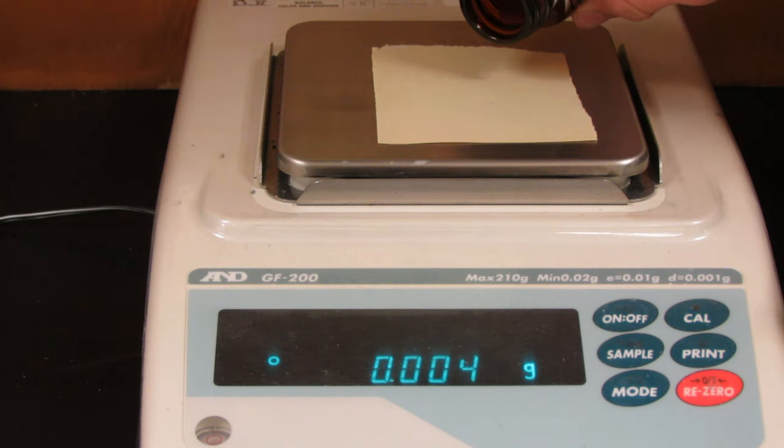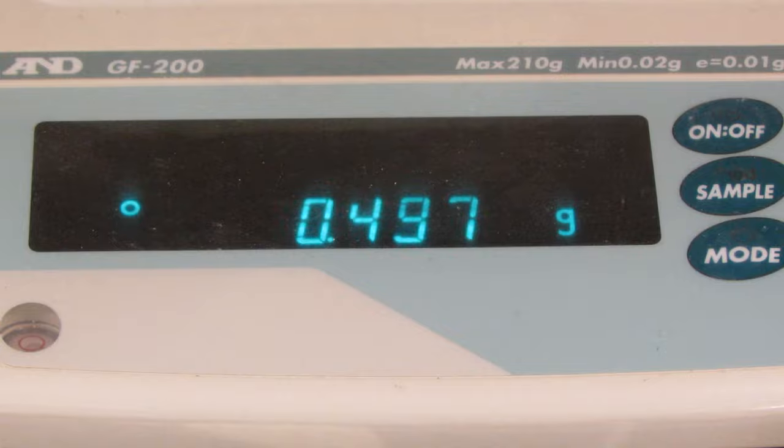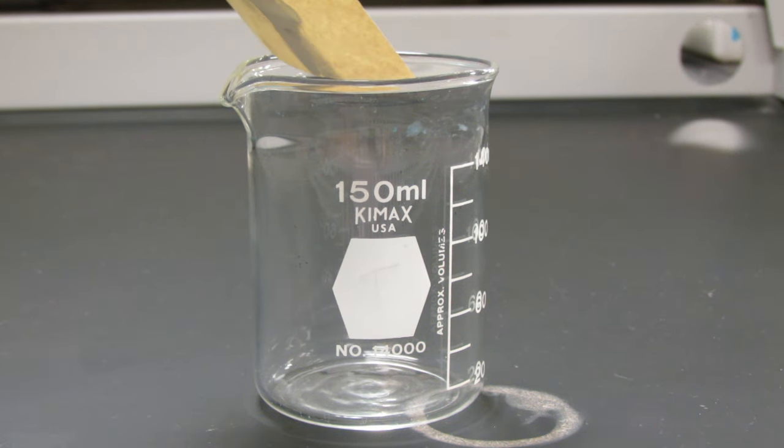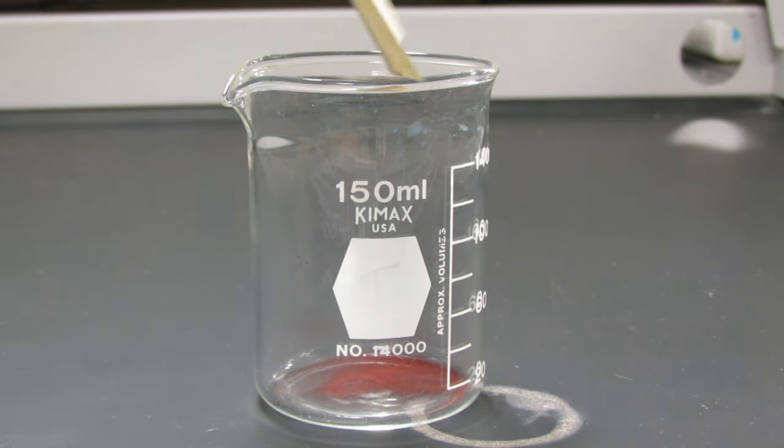Now it's time to actually perform the experiment. First, weigh out half of a gram of copper powder and put it into a 150 milliliter beaker.